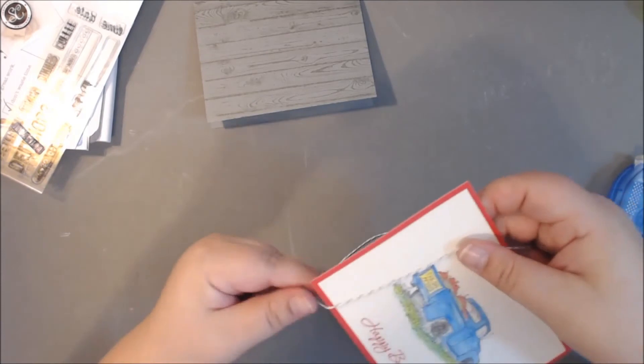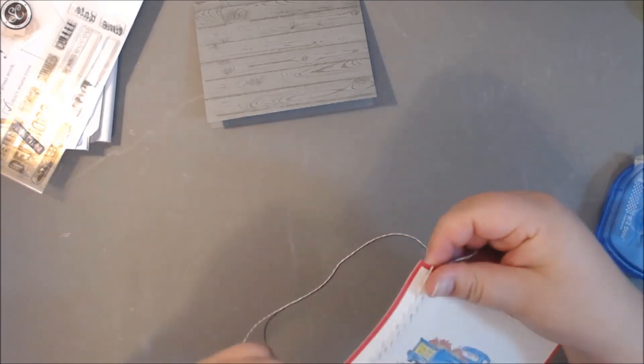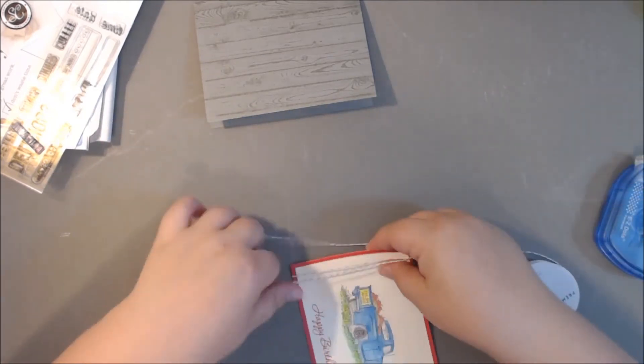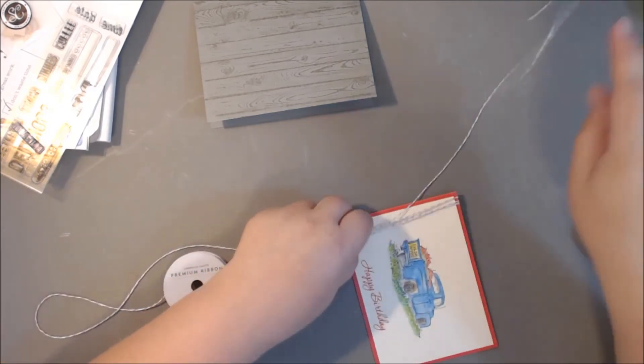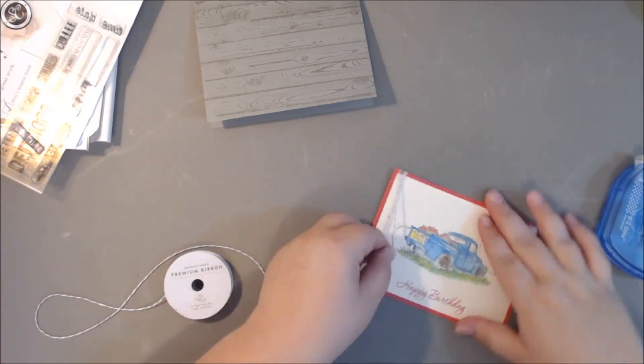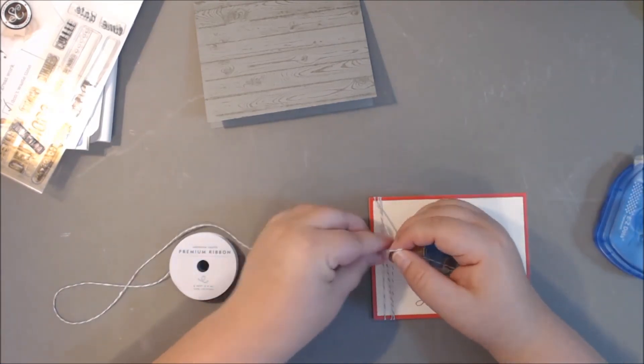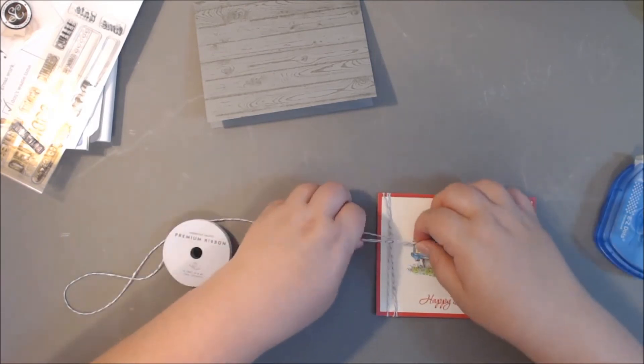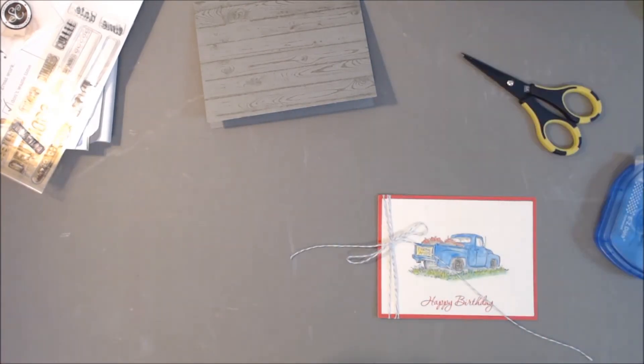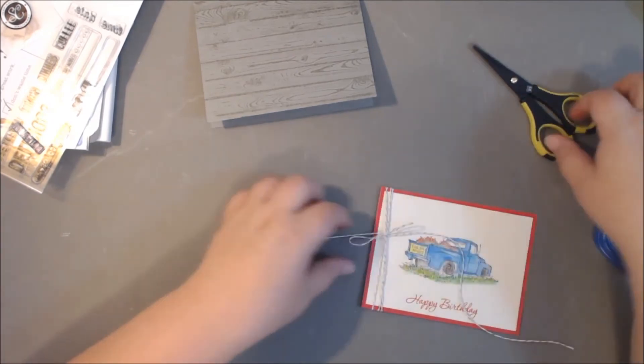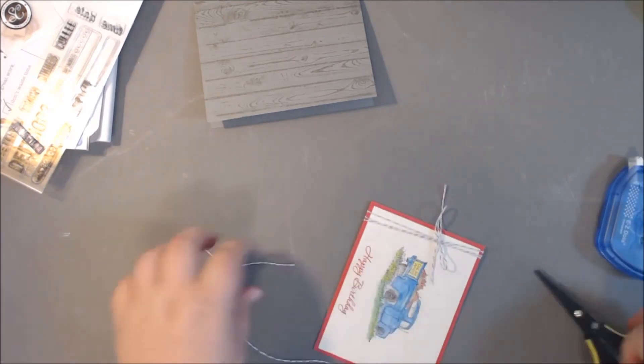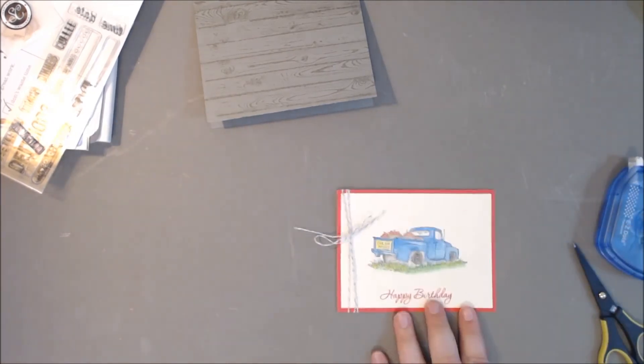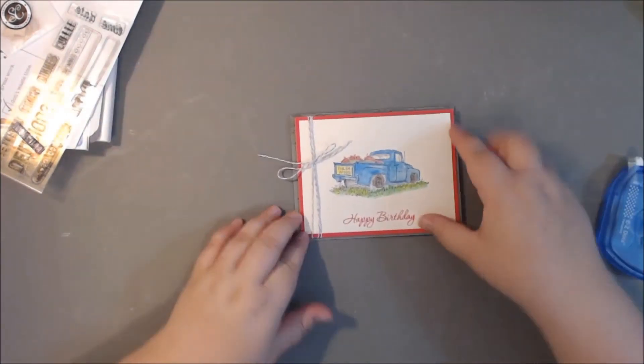Then I took this gray twine that I had, it was left out on my desk, and I thought, hey, that'll be perfect, it'll match the card base. I'm not very good at tying bows or knots or anything, so it took me a couple tries to get this just right, but I did like the way it turned out in the end. I just did a simple bow, and I cut it off and tried to neaten it up. Yeah, I'm not a good bow maker at all. I actually have a bow maker, but I didn't pull it out for something like this.